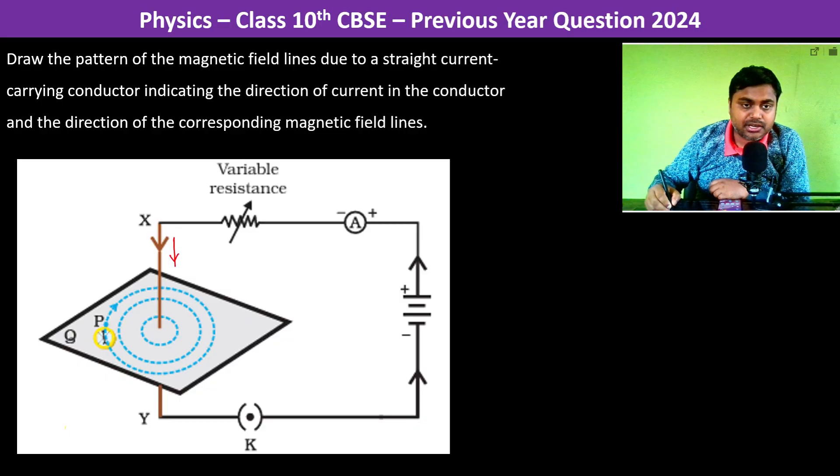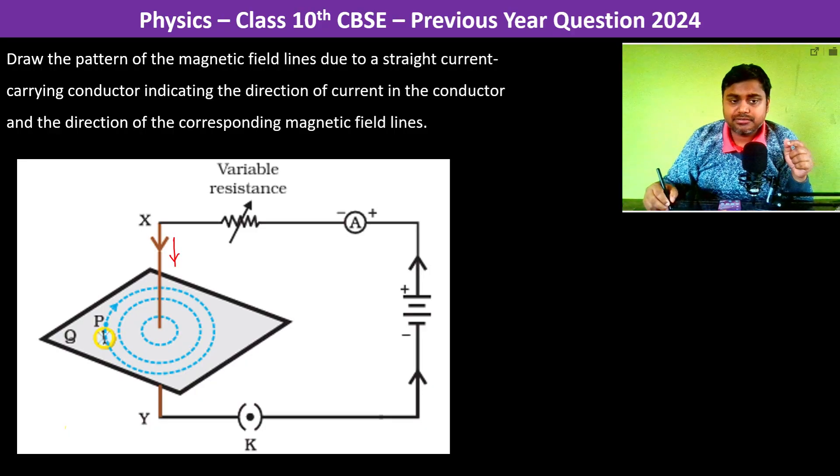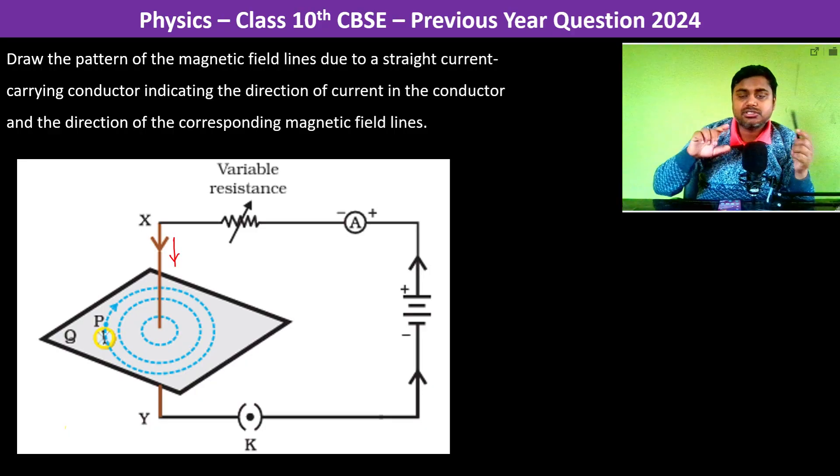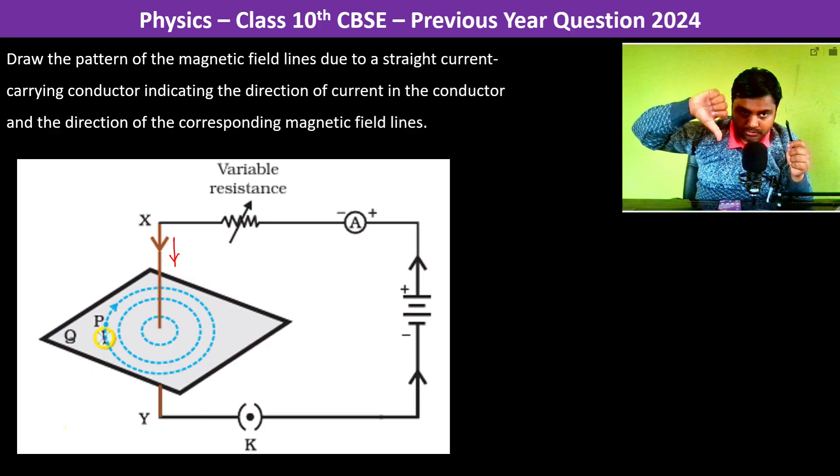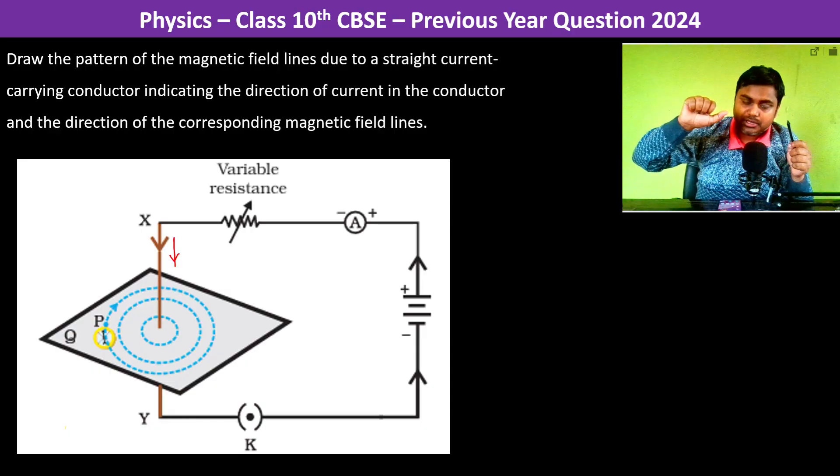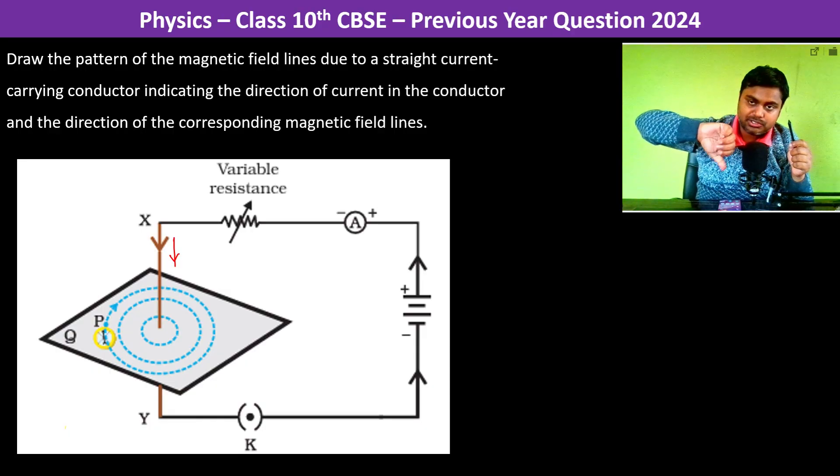This is a straight current carrying conductor and this is the direction of current. By the right hand thumb rule, the current is going downwards. The thumb indicates the direction of current which is going downwards.